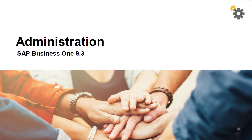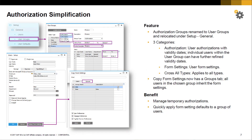So I'll skip the early part and we'll talk about administration and what's been added. There's going to be another simplification to authorizations. The authorization groups that were introduced recently will be renamed to user groups and relocated under Setup General. There will be three categories: authorizations, which is user authentications with validity dates — individuals within the user group can have further refined validity dates — form settings, which will be common to all users in the group, and cross all types, which applies to all types.